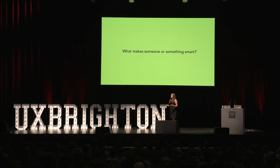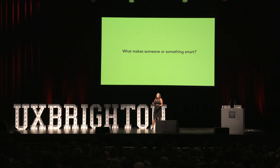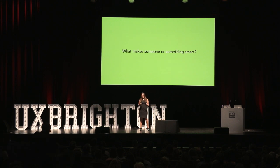When I approach an AI product, I often like to think to myself, what makes someone or something smart? Having done this a few times, I started a framework, because I realized there were some really predictable elements for how we perceive something as intelligent or smart. There are really three stages that you go through, and I'm going to touch on these one at a time.